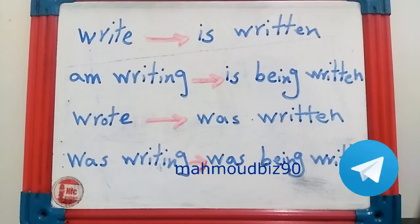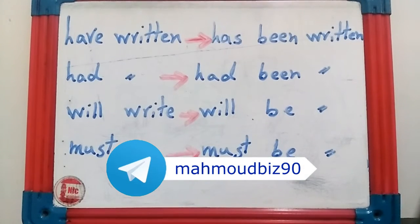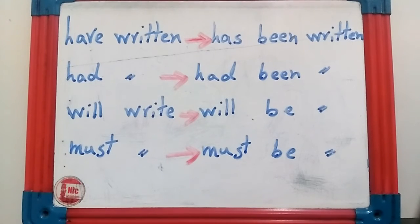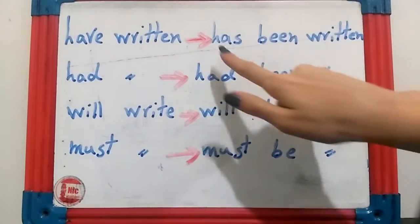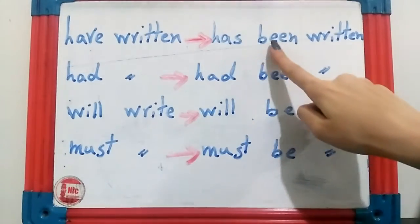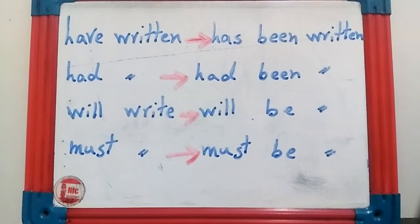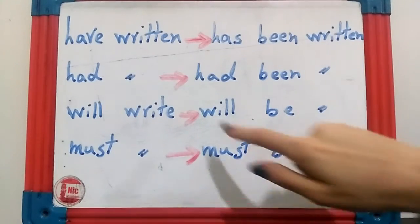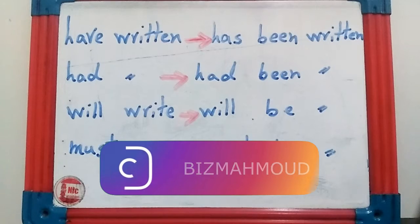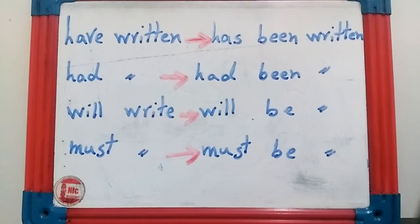Now here are some other tenses for changing active to passive. The first is present perfect: 'have written.' To convert present perfect to passive, the structure is: has/have + been + past participle — so 'has been written.' Next is past perfect: 'had written.' To convert past perfect to passive, the structure is: had been written — had + been + past participle.